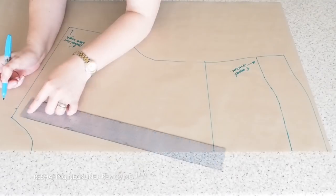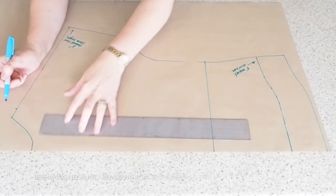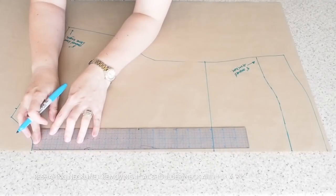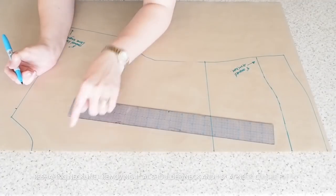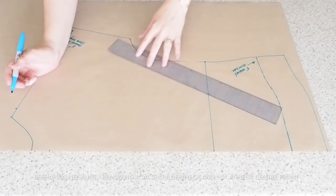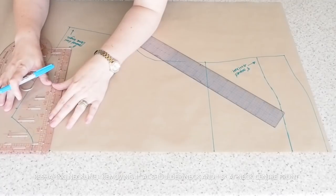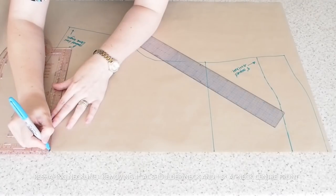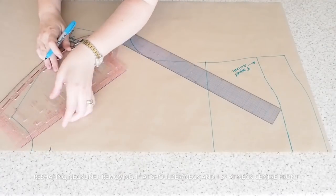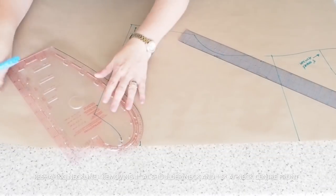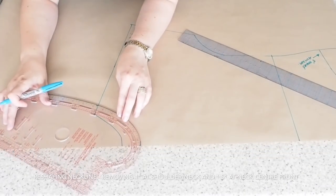And as I say, I want this to be a t-shirt that I can just pull over my head without any openings or fastenings, I should say. So I'm reshaping the front neckline also. So I've come in from the neck point on the shoulder, one inch. And I've measured down the center front at the neck, one and a half inches.